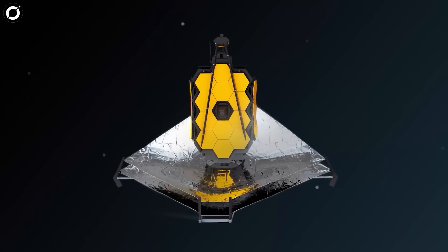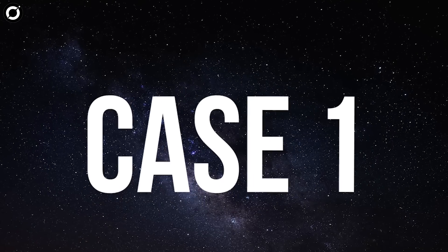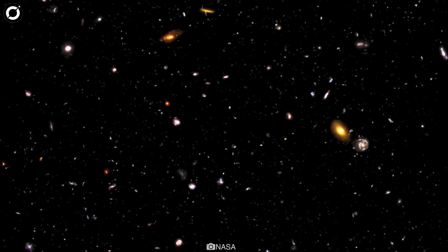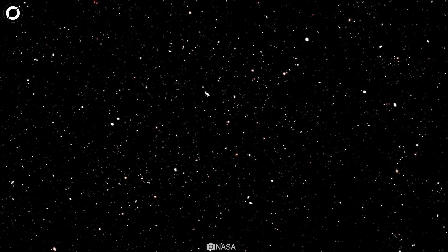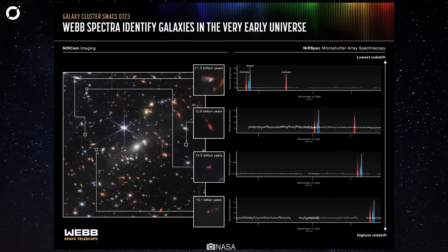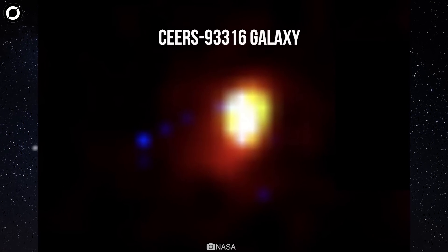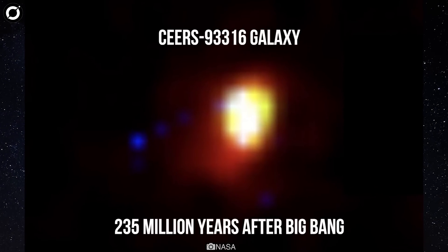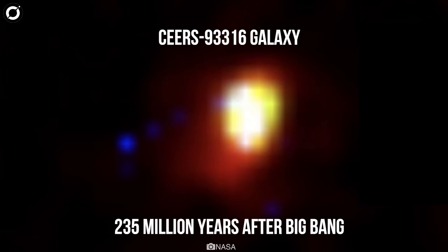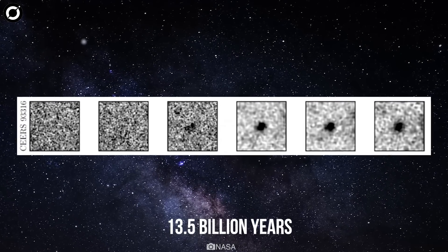The Big Bang never happened. How is Webb proving that? Case one: The very first results from the James Webb Space Telescope seemed to indicate ancient massive luminous galaxies that had already formed within the first 250 million years after the Big Bang. One such galaxy, known as CEERS-93316, existed just 235 million years after the Big Bang. This galaxy is so remote that their light took some 13.5 billion years to reach us.